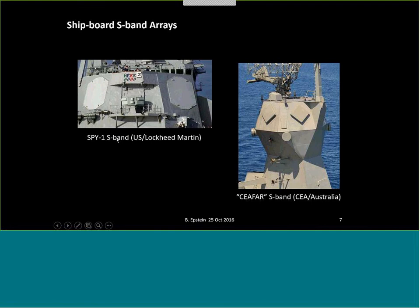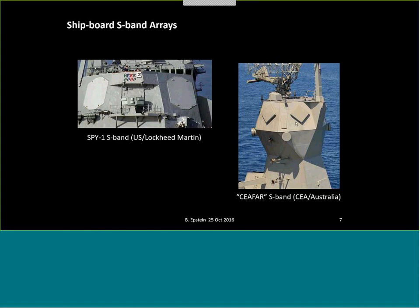The SPY-1 radar operates at about 3 gigahertz S-band with 4,000 to 5,000 elements in each array. It has gone through many generations and is deployed on many ships, even outside the U.S. Another interesting array is from CEA Technologies of Australia, whose objective was to keep array costs down using commercial off-the-shelf parts — especially FPGAs, data converters, and processors — creating what is perhaps the first operational all-digital radar.